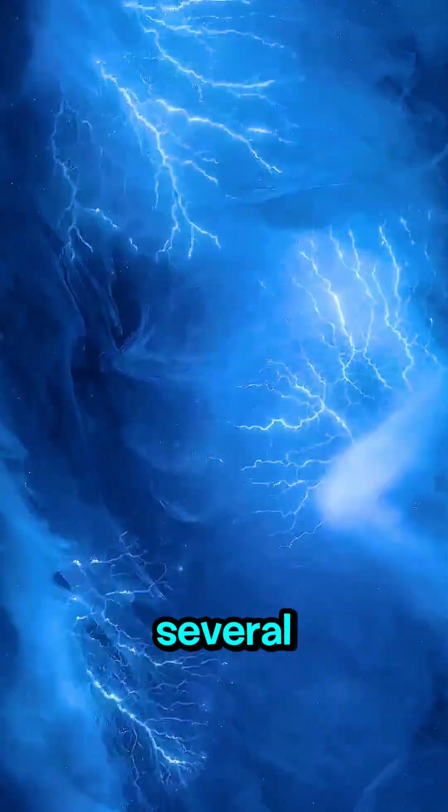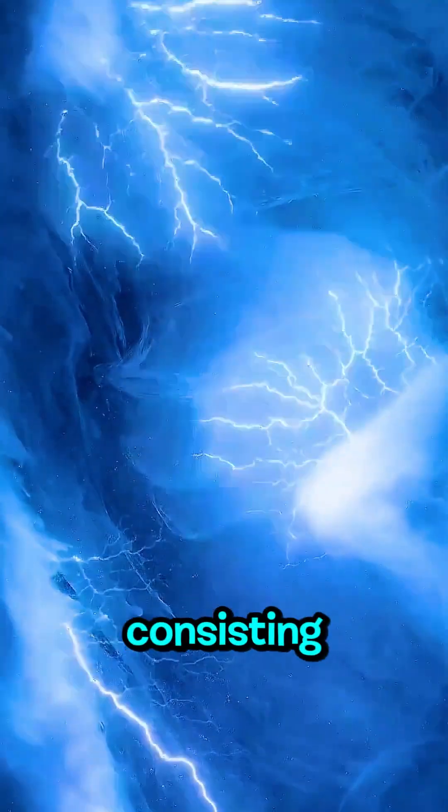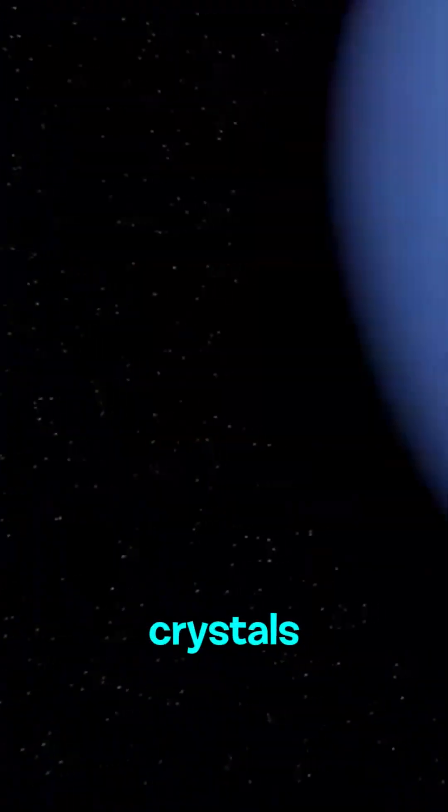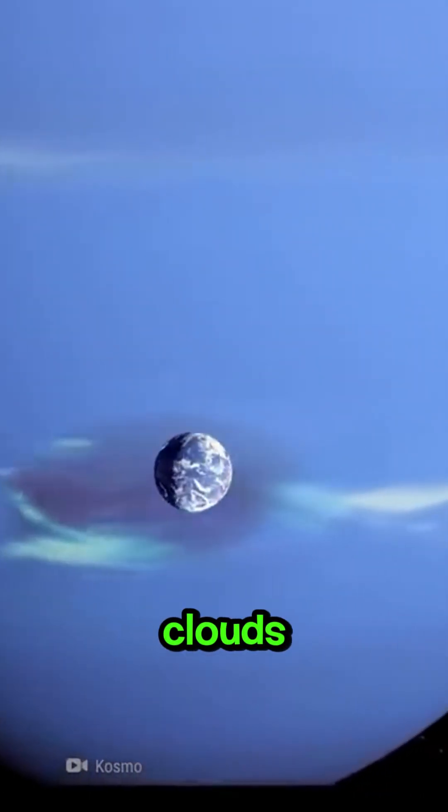The atmosphere is divided into several layers, with the outermost layer consisting of clouds made of methane ice crystals. Beneath this layer, there is a region of warmer gases and deep clouds that swirl under the influence of Neptune's complex weather systems.